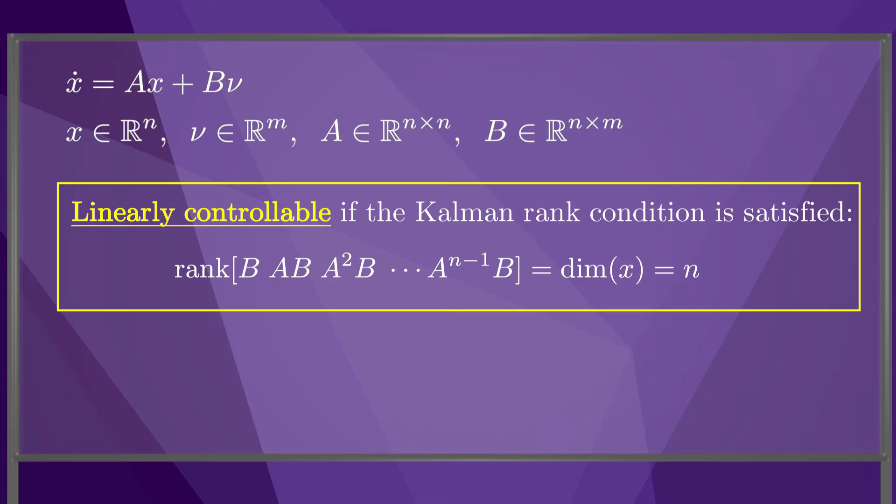If a system is linearly controllable, it's possible to drive it between arbitrary states. To stabilize the origin, we can choose the feedback controller nu equals minus k times x, resulting in the dynamics x dot equals a minus b k times x. For stability, we need to choose k so that the eigenvalues of a minus b k all have negative real components.